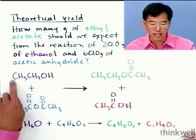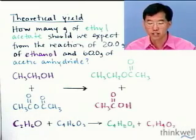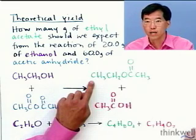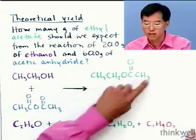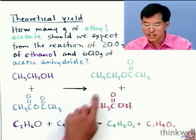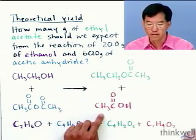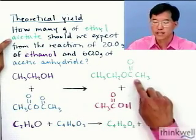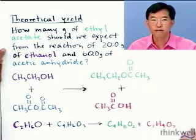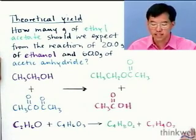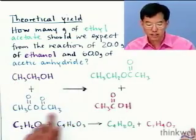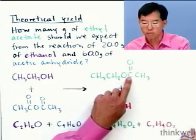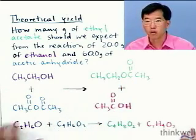Ethanol is grain alcohol — that's the alcohol in our gin. Ethyl acetate is a common form of nail polish remover. Acetic acid is the acid in vinegar. Here's the problem: how many grams of ethyl acetate should we expect from the reaction of 20 grams of ethanol and 60 grams of acetic anhydride? This is a balanced reaction — one mole of ethanol plus one mole of acetic anhydride forms one mole of ethyl acetate and one mole of acetic acid.